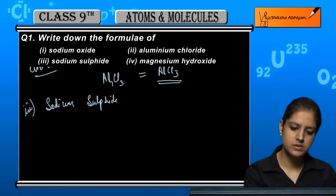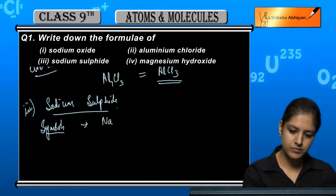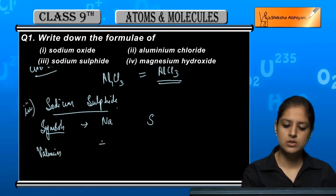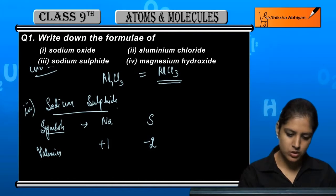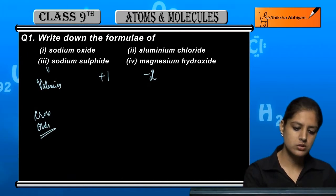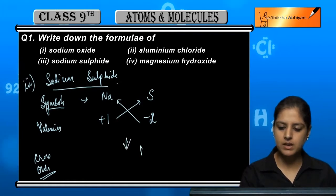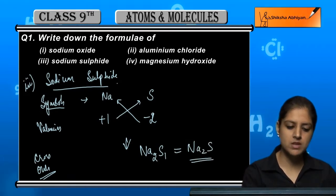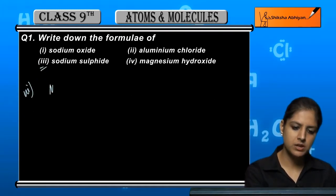Sodium sulphide. First we will write the symbols. Sodium symbol is Na, sulphide is S. Then we will write the valencies. Sodium is plus one, sulphide is minus two. We will cross over. Plus one goes to S and minus two goes to Na. So the formula is Na2S1, which equals Na2S.